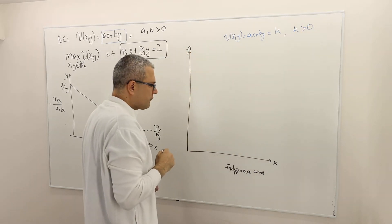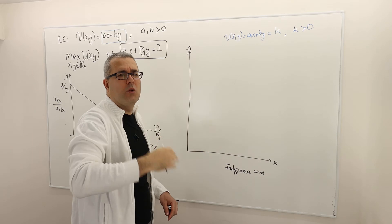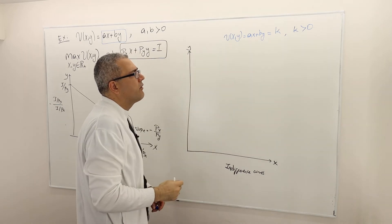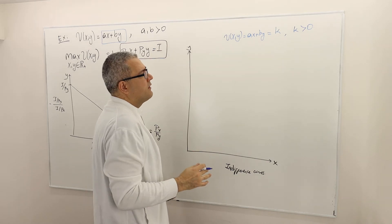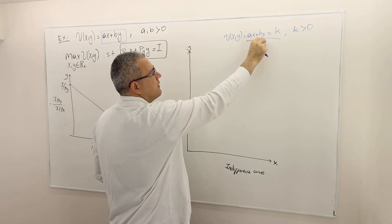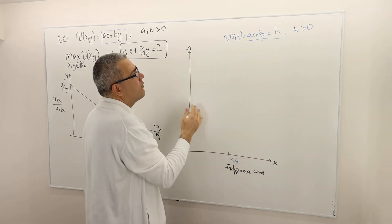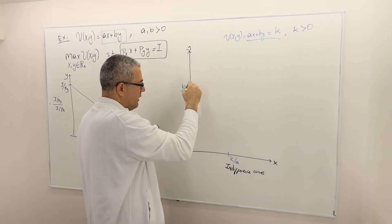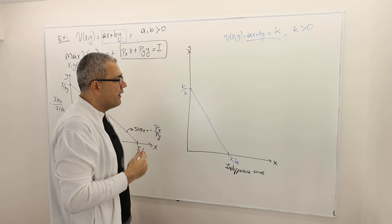Assuming that K is some positive real number - I don't care about negative values because X and Y are always non-negative choices. When K is some positive number, the X-intercept is when Y is 0, so X equals K divided by A, and the Y-intercept is equal to K divided by B. The straight line connecting these two points is nothing but an indifference curve.